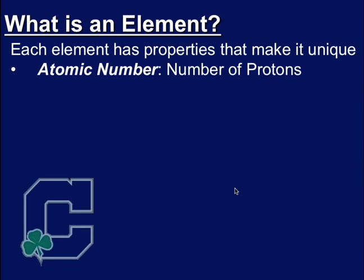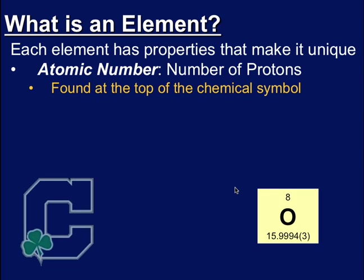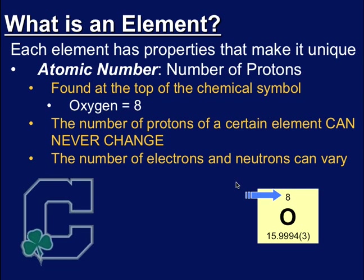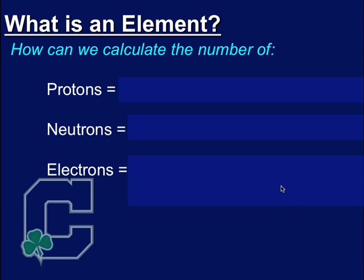The other important number is known as the atomic number, and that's the number of protons in an atom. It's found at the top of the chemical symbol. It's an important number because it controls everything about that atom. If we change the number of protons, we actually change what that atom can do. Now, the number of electrons and neutrons can vary, but the number of protons can never change, and that's an important idea. Because if I added a proton to oxygen, for example, it would no longer be an 8. It would be a 9 up here, which would mean it's no longer oxygen, but it's actually fluorine, which is the one just to the right of oxygen.